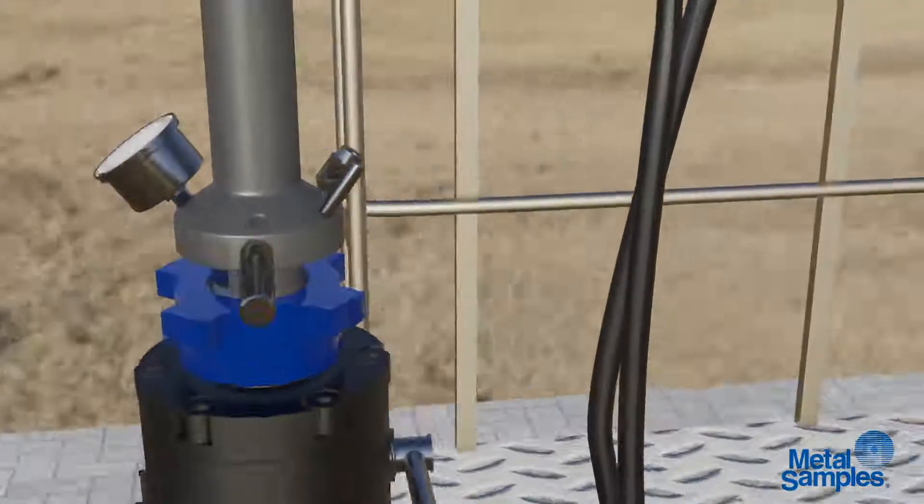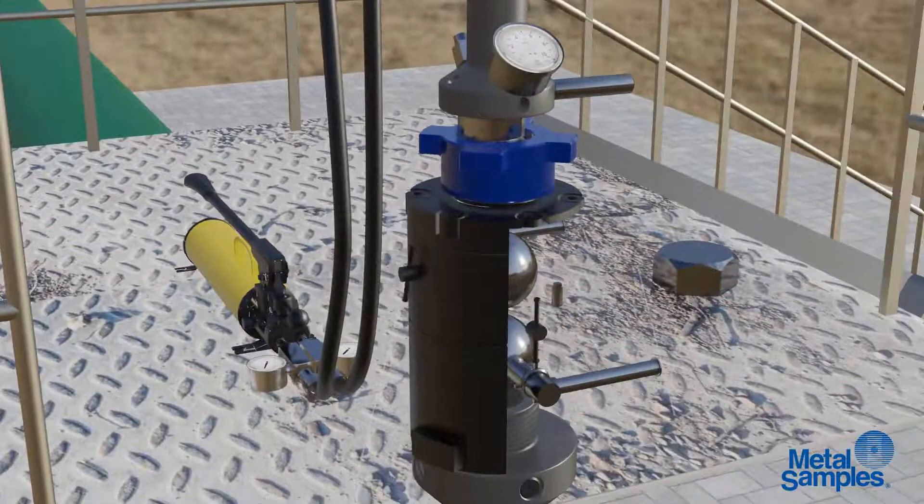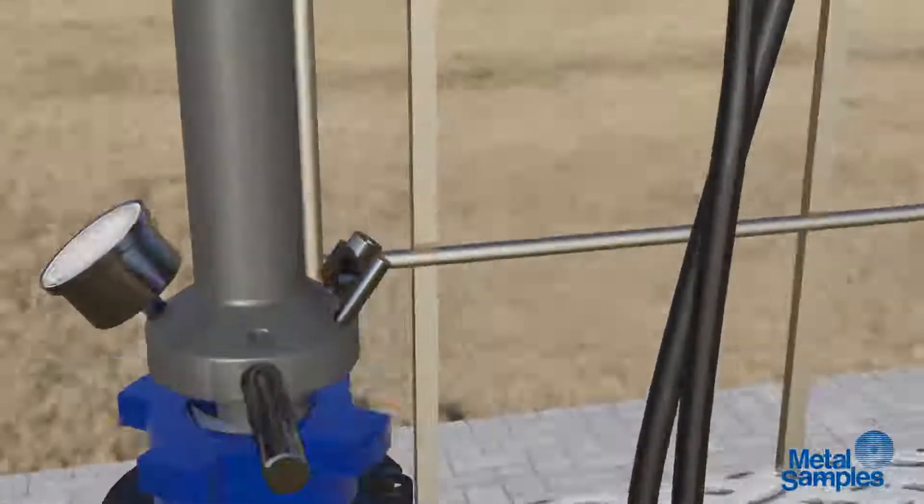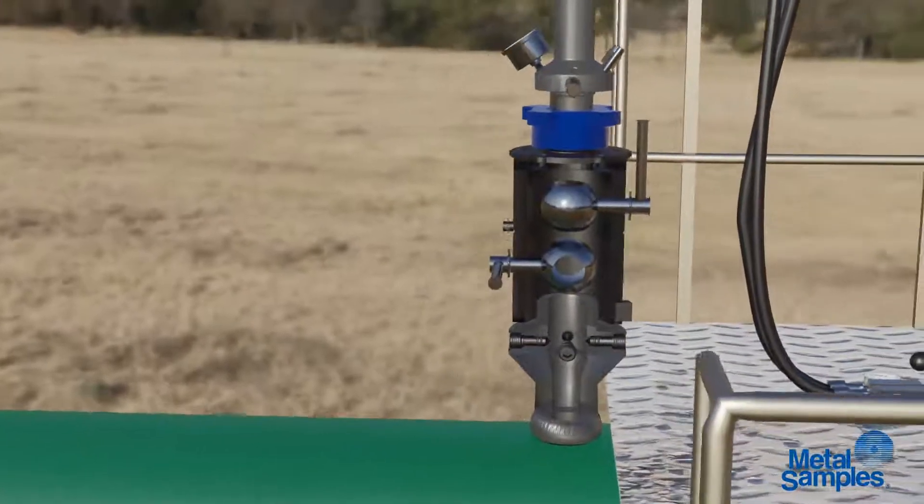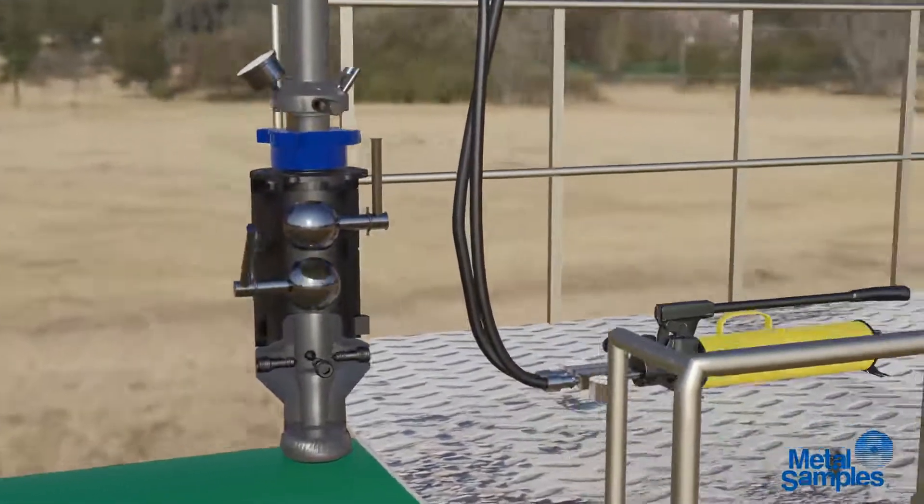Open the bypass valve to balance the pressure in the service valve. Slowly open the bypass valve for the upper ball valve, then open the ball valve itself. Follow the same procedure for the lower ball valve.